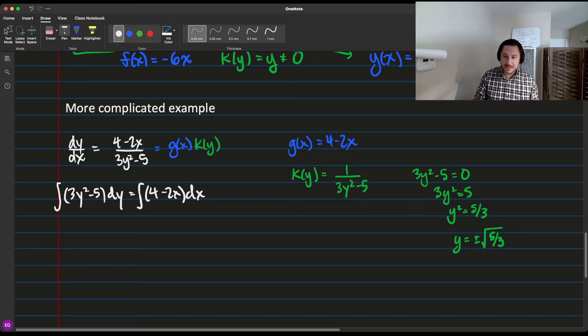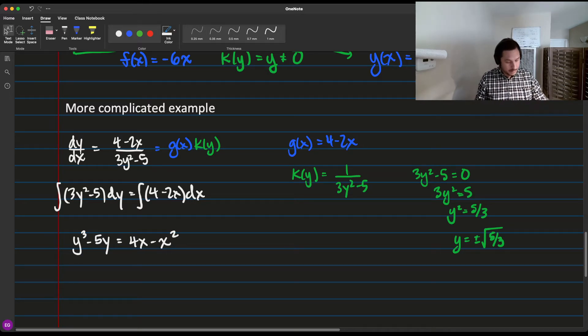Then we've got to integrate. Alright. So let's do this. Antiderivative of 3y squared is literally y cubed. Antiderivative of 5 is 5y. Antiderivative of 4 is 4x. Antiderivative of minus 2x is minus x squared. And you get like a plus c.